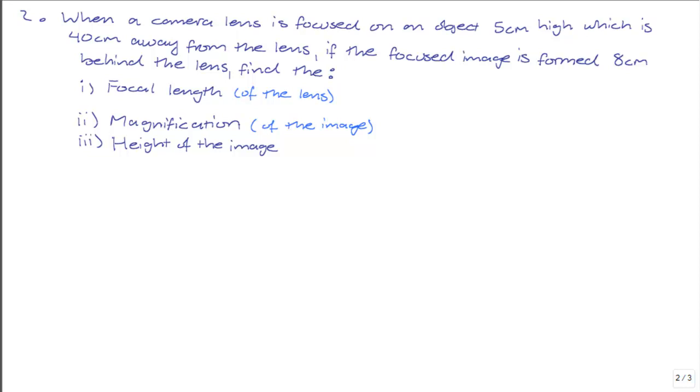So today's question asks, when a camera lens is focused on an object 5cm high, which is 40cm away from the lens, if the focused image is formed 8cm behind the lens, find the: